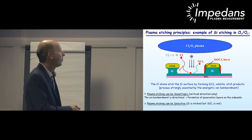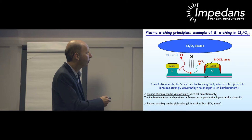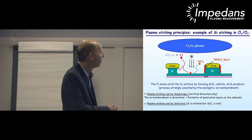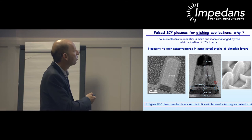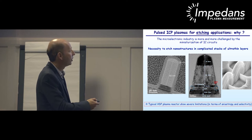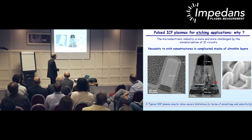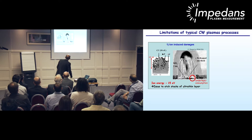So we go only in the vertical direction. Another interest of plasma etching is that it can be selective, which means the silicon is etched but not the oxide. This allows you to stop on a very thin layer during etching. Now, why are we interested in pulsed ICP plasmas for etching applications today? The motivation is that the microelectronics industry is increasingly challenged by the fabrication and miniaturization of integrated circuits. Today it's necessary to etch nanostructures in very complicated stacks of ultrafine layers, sometimes in three dimensions. Typical high-density plasma reactors show severe limitations in terms of anisotropy and selectivity.